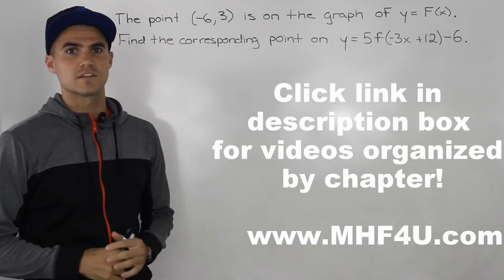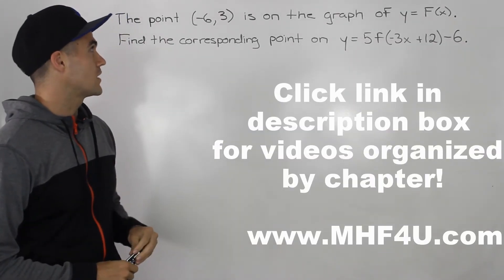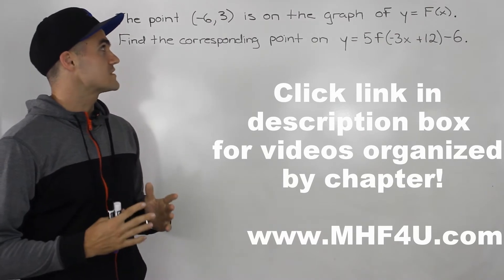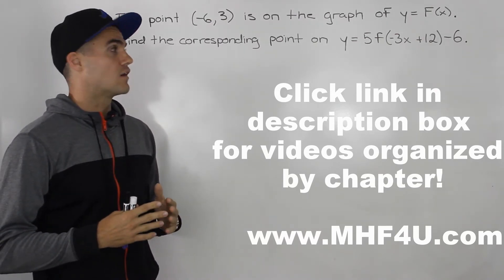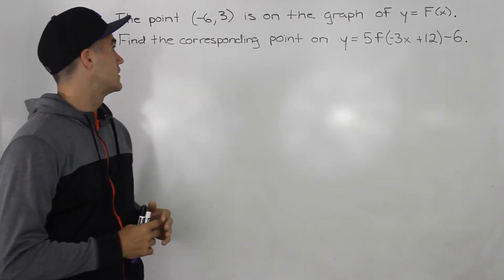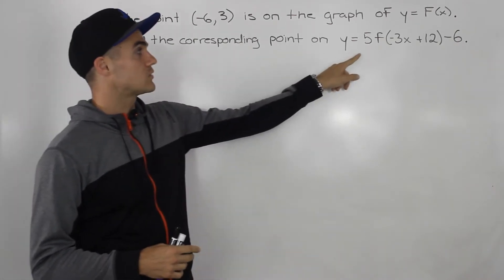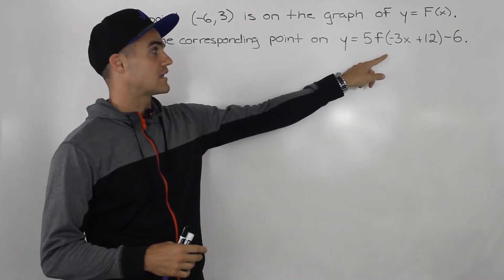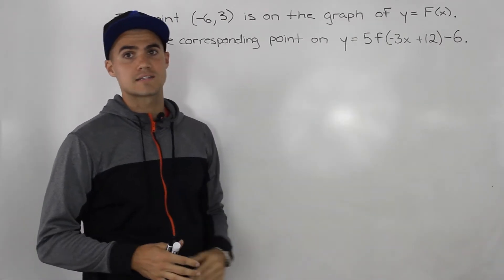What's up everybody? So we're going to be starting the test now. Here we go, the first question. So the point (-6, 3) is on the graph of y = f(x). Find the corresponding point on y = 5f(-3x + 12) - 6.